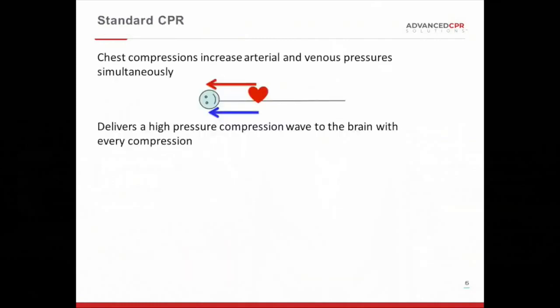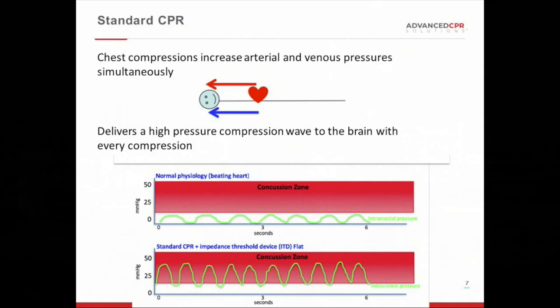When we think traditionally about CPR, we forget that when you push down on the chest, not only does an arterial wave front go to the brain, but you also have a venous pressure wave front going to the brain because of the pressure that goes up in the thorax, pushing venous blood to the brain as well. This causes a high pressure compression wave to the brain with every compression. On the top, you can see normal physiology — intracranial pressure goes up and down with each breath but stays out of the dangerous compression zone. But with CPR, each time you push down on the chest, intracranial pressure can go up to dangerously high levels, causing actual damage to the brain.